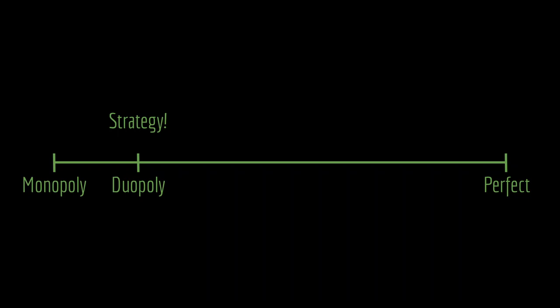Duopolies are a special case of something more generally described as oligopoly — that's anything between monopoly and perfect competition. We're going to be focusing on duopolies in this course for a few reasons. One is that they are relatively easy to analyze. When you only have two actors moving around, there's generally going to be just two things to solve for rather than n number of things to solve for with n firms.